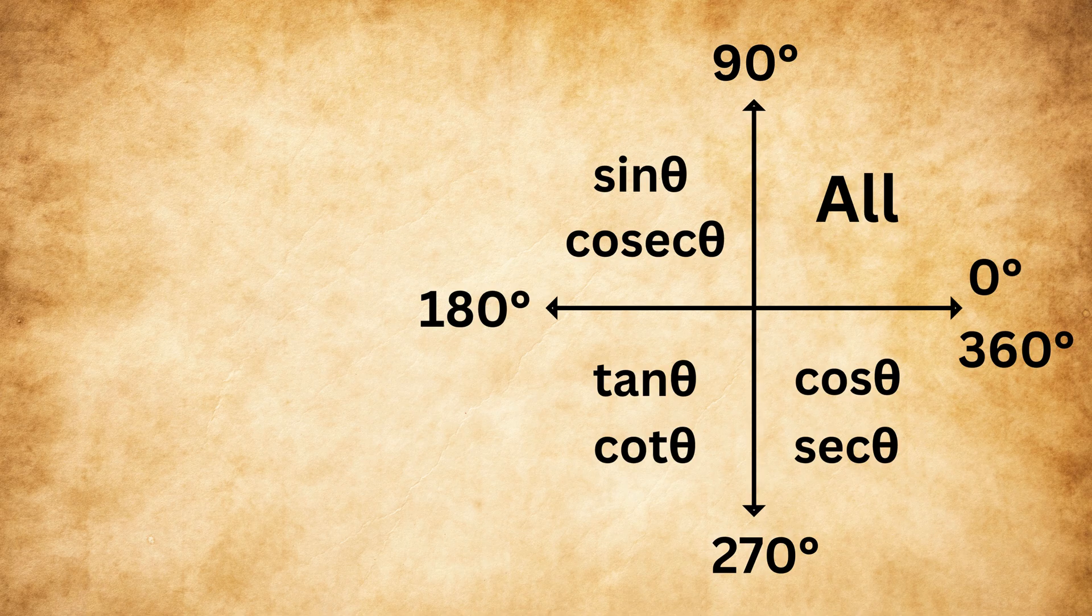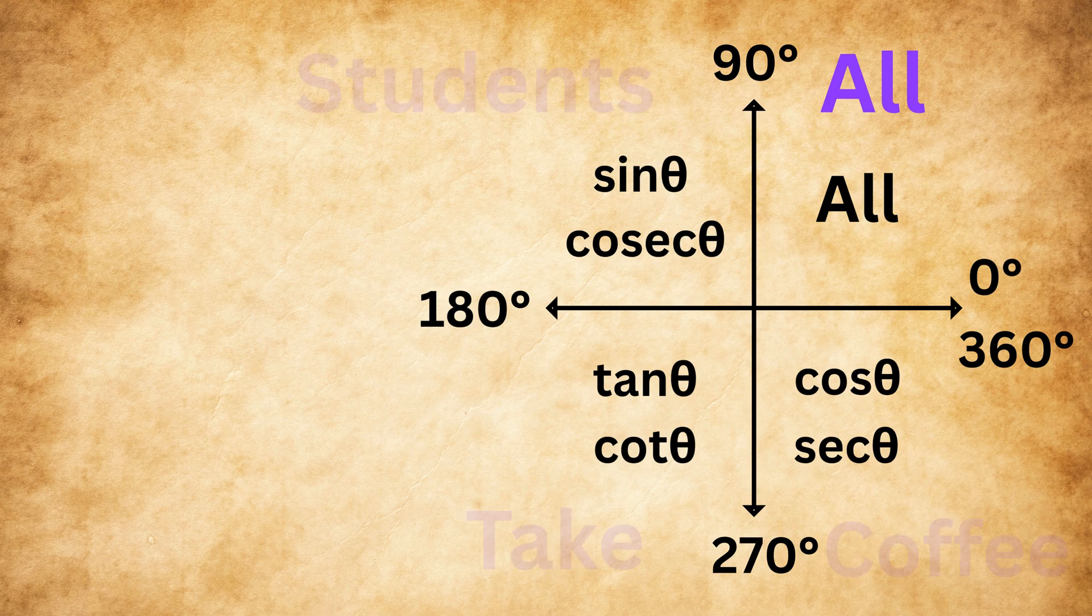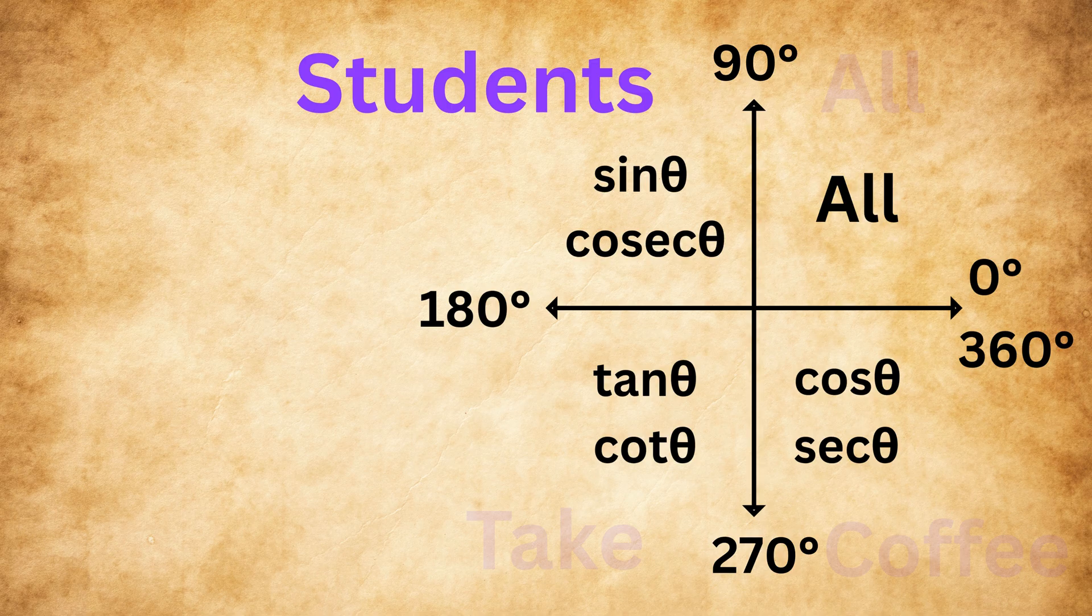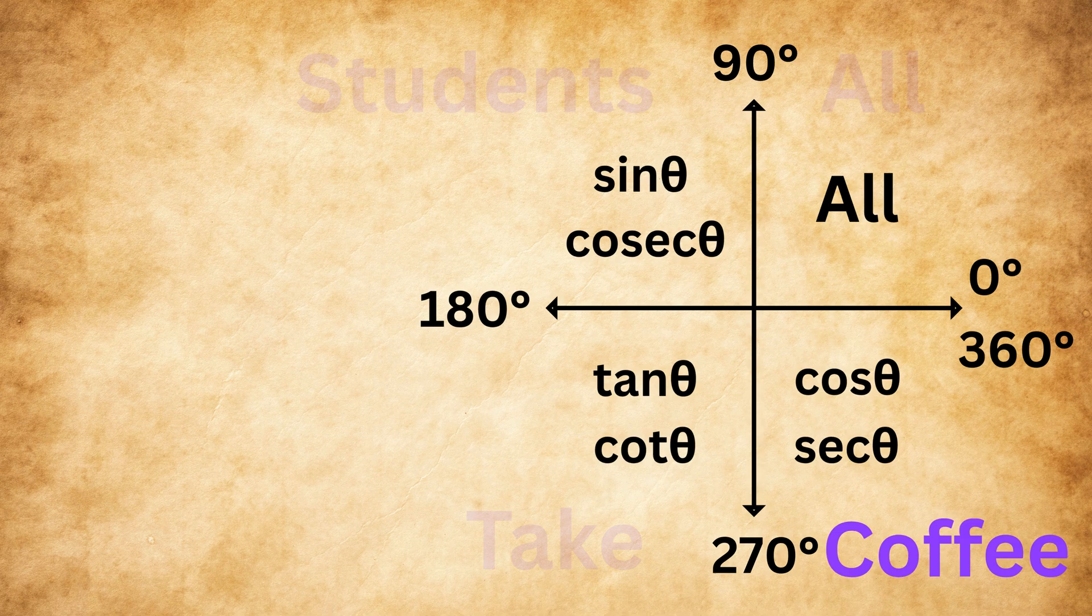A simple way to remember this is through a small trick: All students take coffee. Here, all means all are positive, or the first quadrant. Then students stands for sine, or the second quadrant. Then take for tan, which is the third quadrant. And coffee is for cosine, or the fourth quadrant.